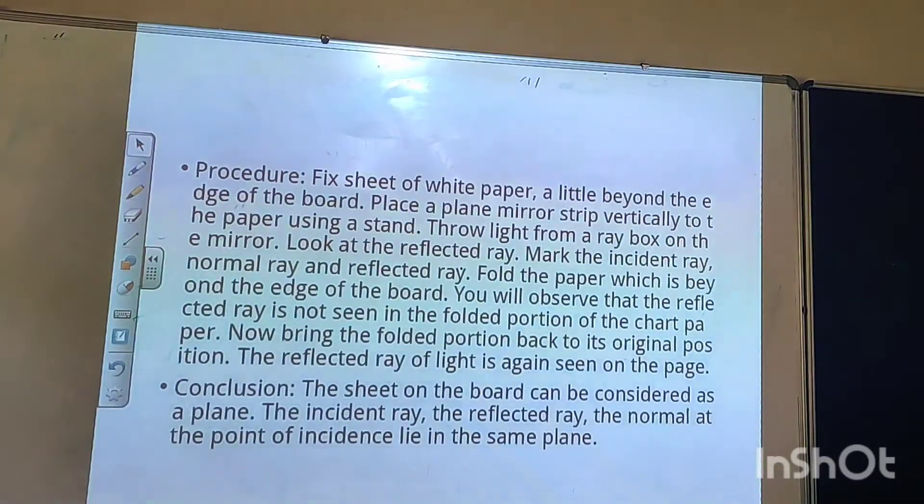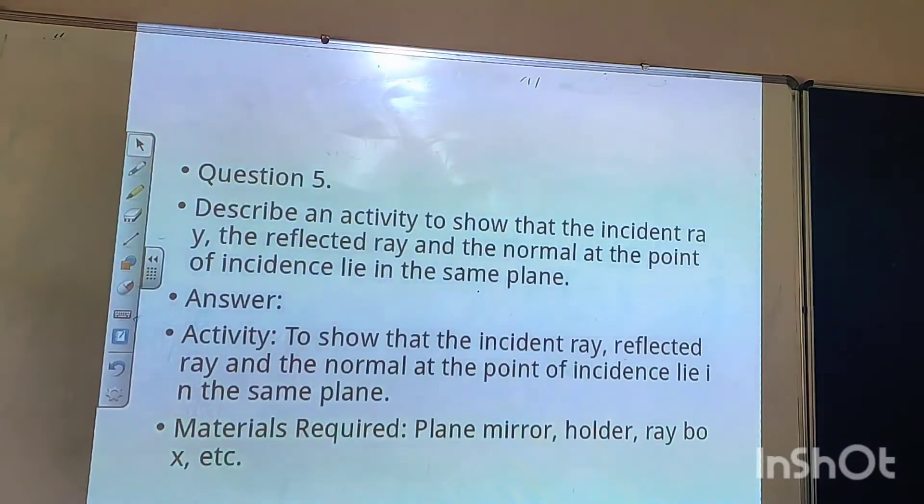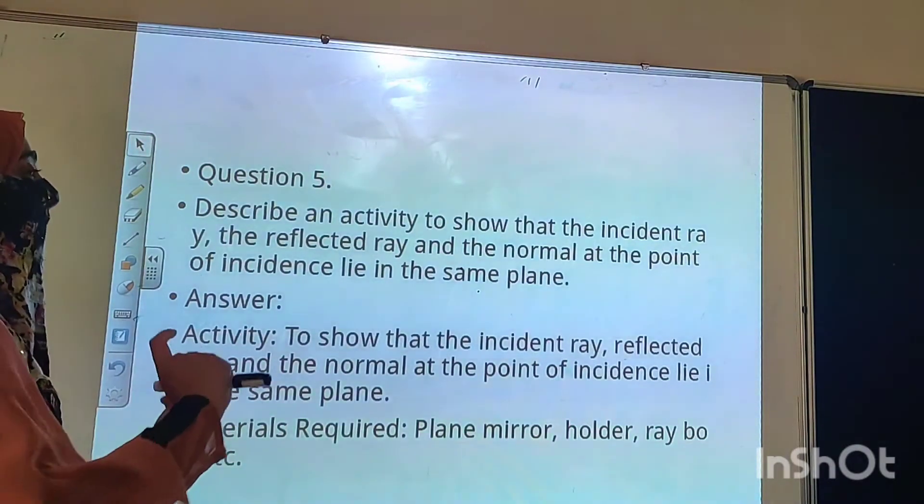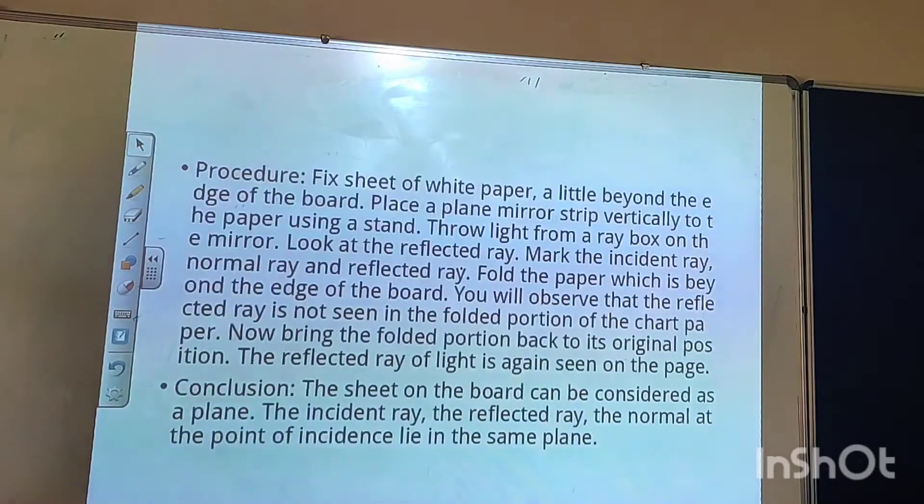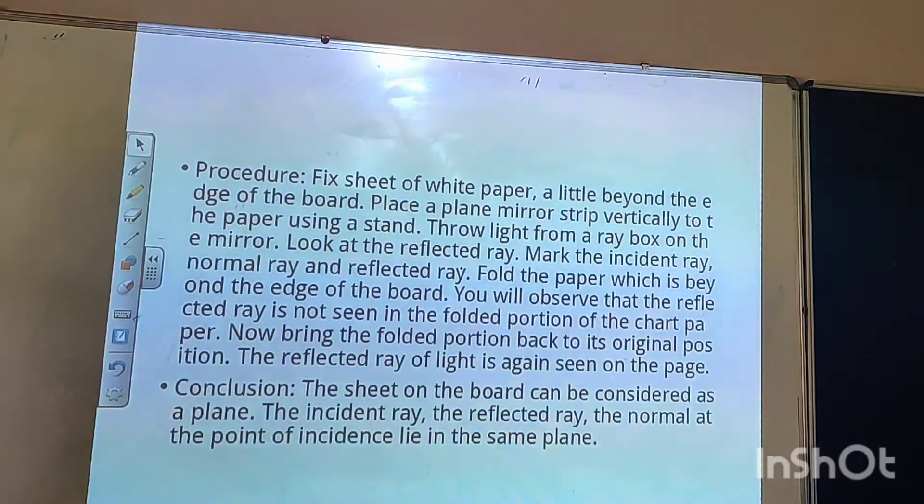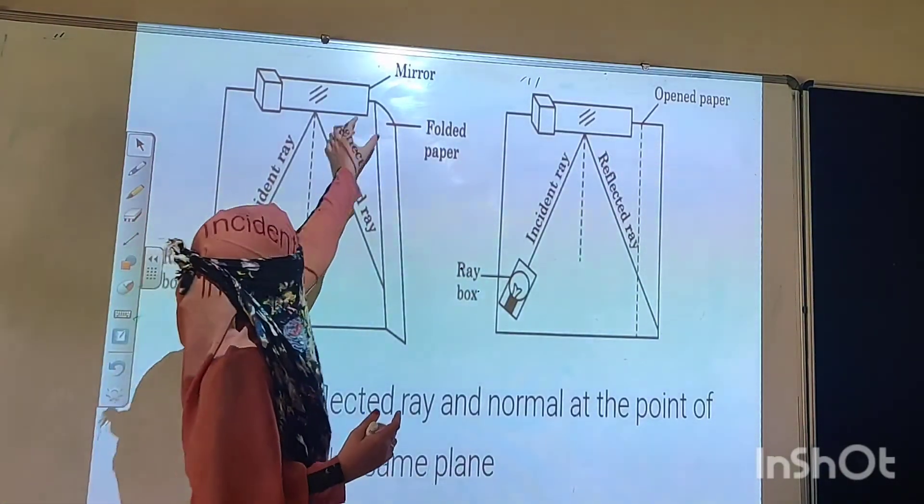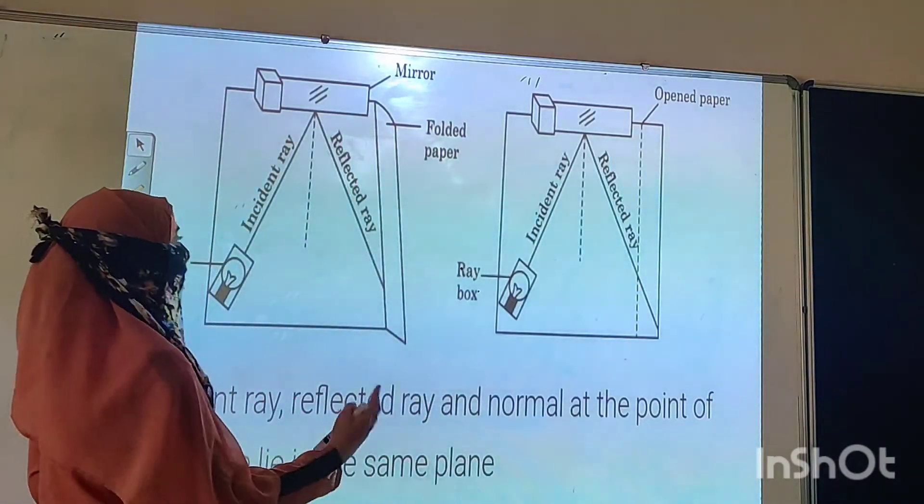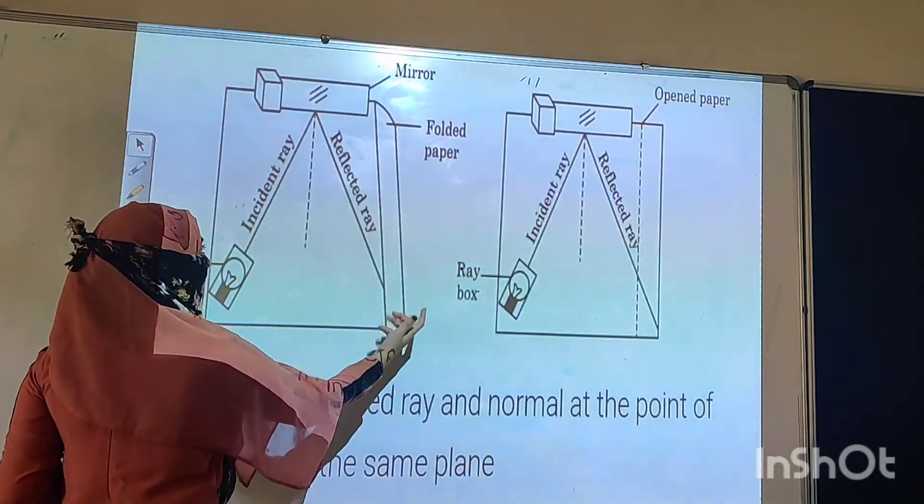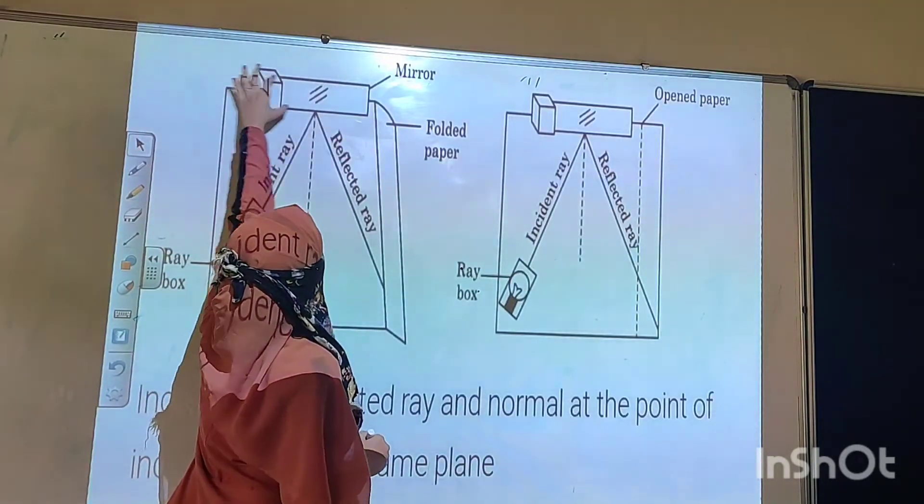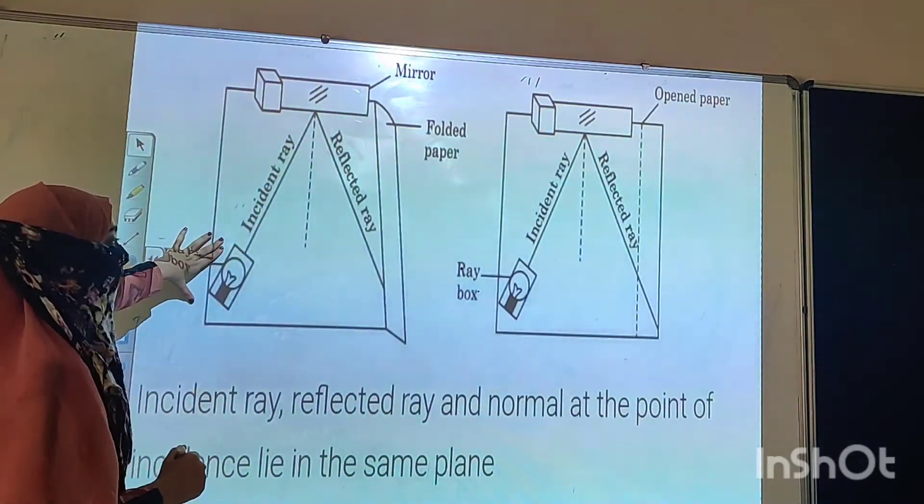The procedure is: fix a sheet of white paper. What you will need is a plane mirror, folder, and ray box. You have to fix the sheet of white paper with cardboard. Then after, suppose this is a sheet of white paper. You will fix it in such a way that some portion of the paper will be left over.